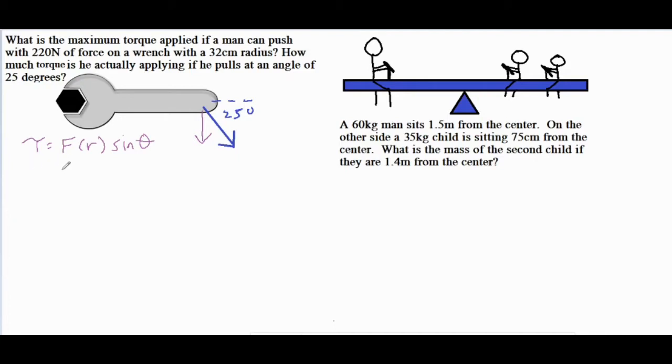For our first one all you have to do is take a force of 220 newtons times 0.32 meters, because the original problem says 32 centimeters so 32 divided by 100 gives us 0.32 meters. And if it's the maximum force then it is applied perpendicular to the handle of the wrench, which would just give you one. And then if you multiply 220 times 0.32 we get 70.4 newton meters for our torque.